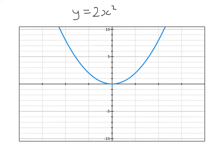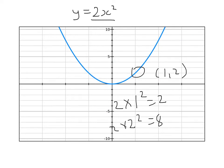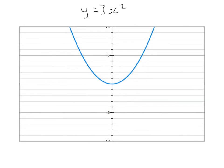Now we've got the graph of y equals 2x squared. This is like the graph of y equals x squared, but every y value is doubled — that's what 2x squared means. 1 squared is 1, 2 times 1 squared is 2, so this point here is (1, 2). 2 squared is 4, 2 times 4 is 8, so this point here is (2, 8). So 2x squared stretches it by a scale factor of 2 in the direction of the y-axis. And y equals 3x squared does the same, but stretches it by a scale factor of 3.